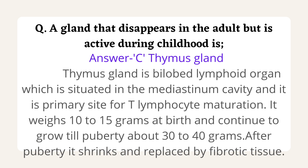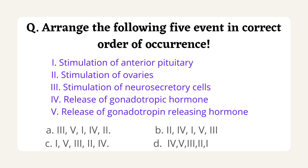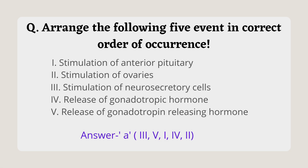The next question is: arrange the following five events in correct order of occurrence — stimulation of anterior pituitary, stimulation of ovaries, stimulation of neurosecretory cells, release of gonadotropic hormones, and release of gonadotropin-releasing hormone. This question was asked in GMCH Chandigarh Steno Exam 2019. We need to know the chain or pathway from hypothalamus to pituitary to the target organ. The correct answer is option A.